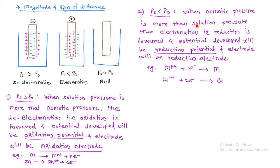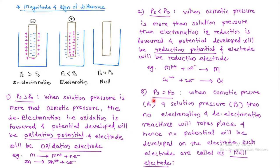When solution pressure equals osmotic pressure, no electronation or de-electronation reaction takes place and no potential is developed on the electrode. Such electrodes are called null electrodes.